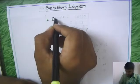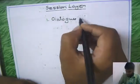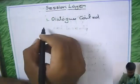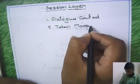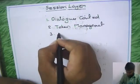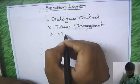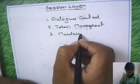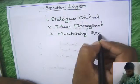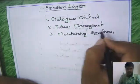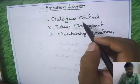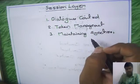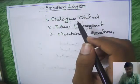The major functionalities of the session layer are: first, dialogue control; second, token management; and third, maintaining synchronization points. These are the major responsibilities of the session layer. The session layer works only when there is a connection-oriented kind of situation — that is when this layer becomes necessary.